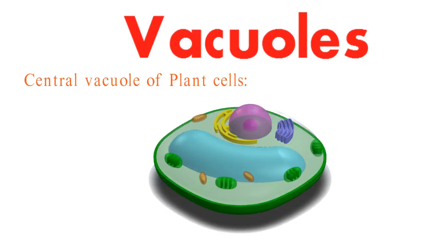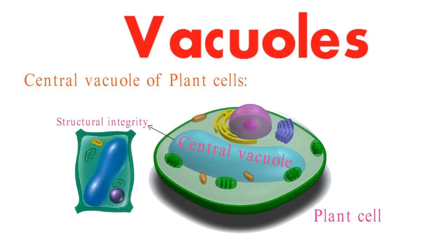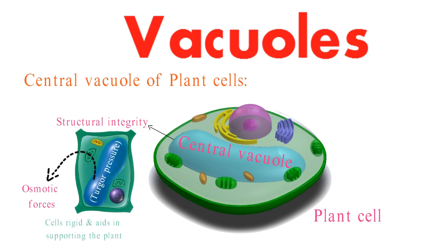Plant cells, known for their structural integrity, owe much of their strength to the central vacuole's role in maintaining turgor pressure. This pressure, generated by osmotic forces, keeps cells rigid and aids in supporting the plant's overall architecture.